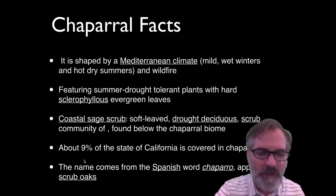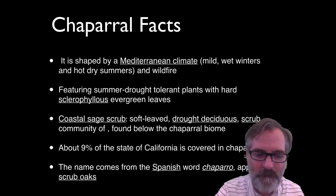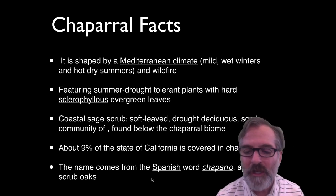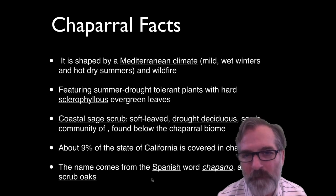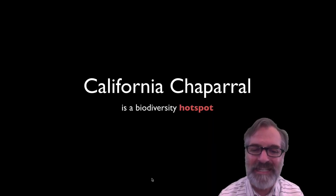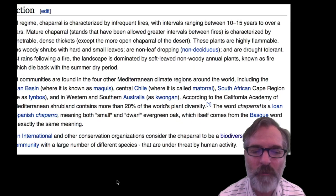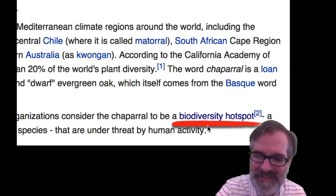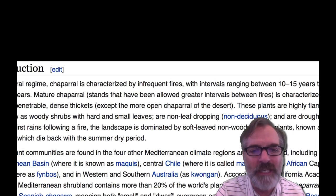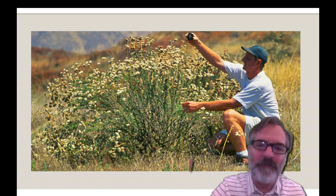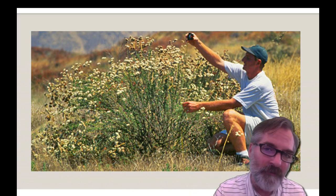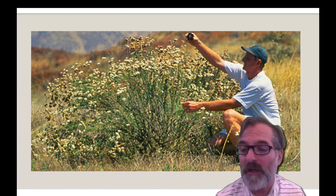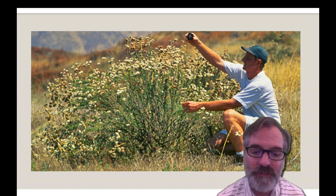About 9% of the state of California is covered with chaparral, and the name comes from the Spanish word chaparral, applied because of the scrub oaks. California chaparral is a biodiversity hotspot—when I was reading up on it I was blown away that chaparral is considered a biodiversity hotspot. You think of a tropical rainforest when you think of biodiversity hotspots, but Southern California has been identified as one of the world's richest biodiversity hotspots by the international conservation community.